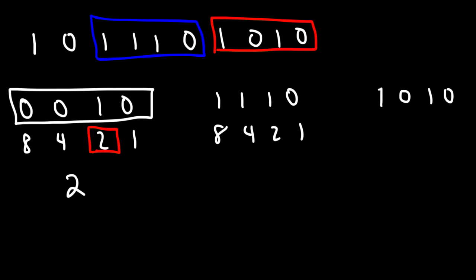For the second group of four, we need to add 8 plus 4 plus 2. 8 plus 2 is 10, and 10 plus 4 is 14.